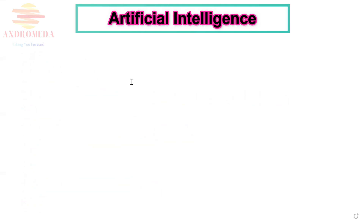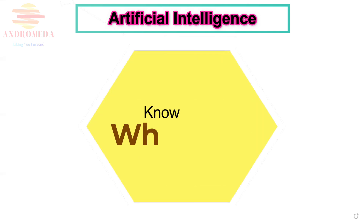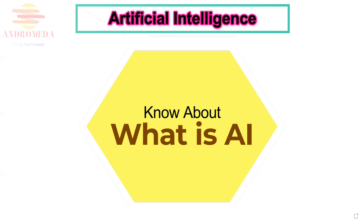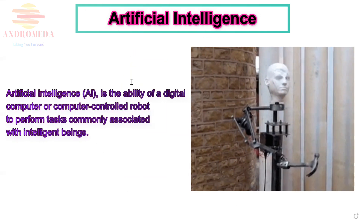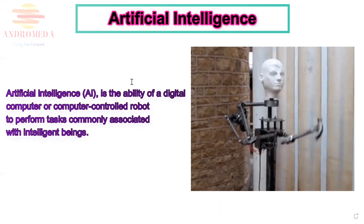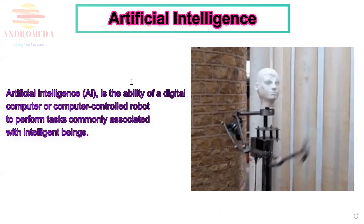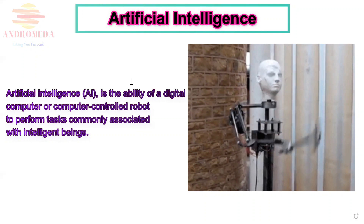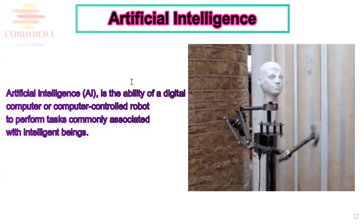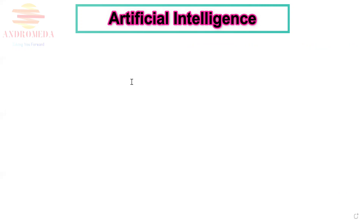The first thing is: what is AI? In simple words, artificial intelligence is the ability of a digital computer or computer-controlled robot to perform tasks commonly associated with intelligent beings. It also involves acting on data, learning from new data, and improving over time — just like a human child growing up into a smarter human adult.